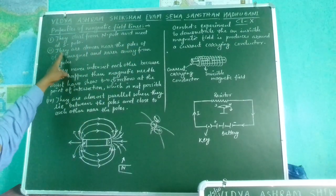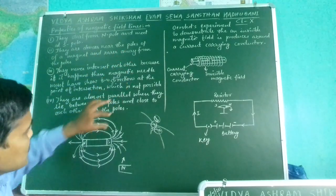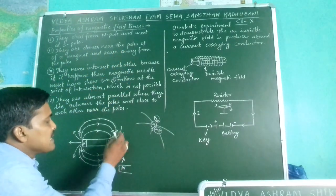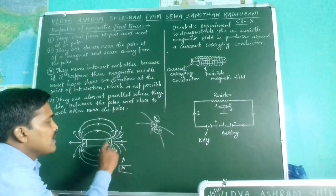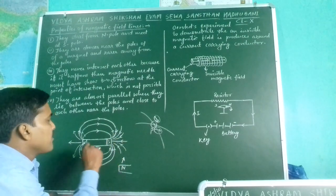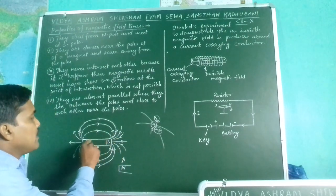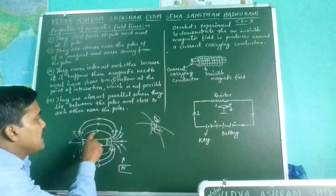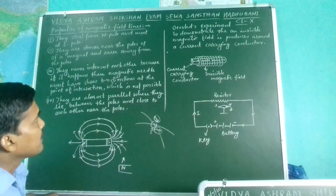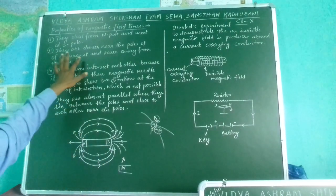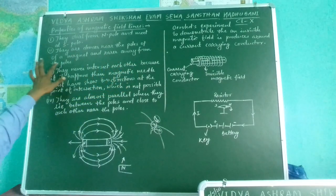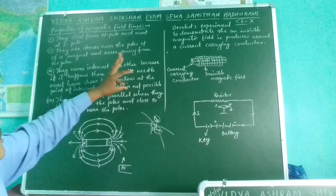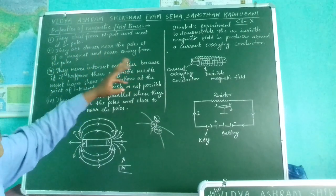The second feature is: they are denser near the poles and rarer away from the poles. The density of magnetic field lines is very high near the poles, but as we go away from the poles, they become rarer and more spread out.